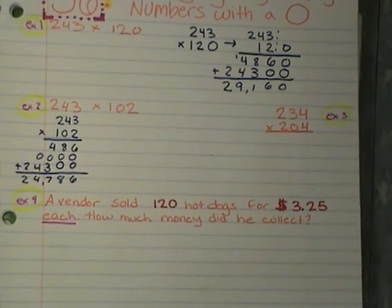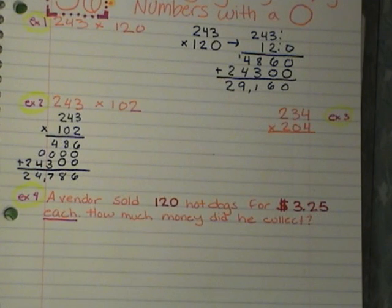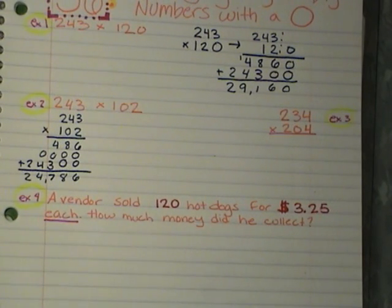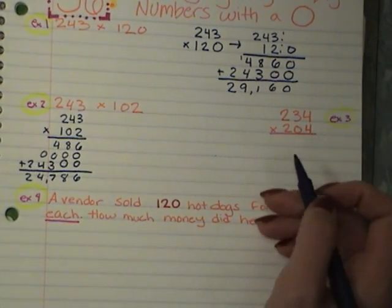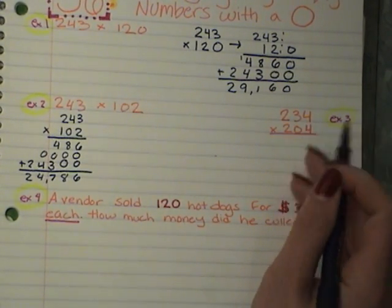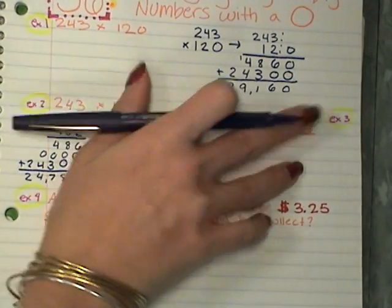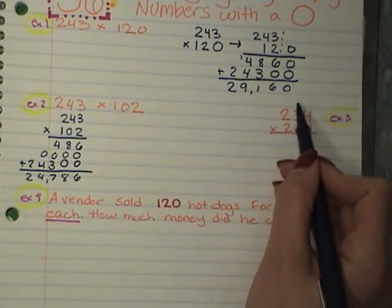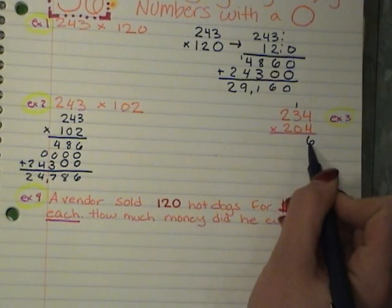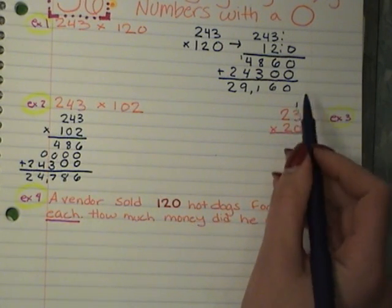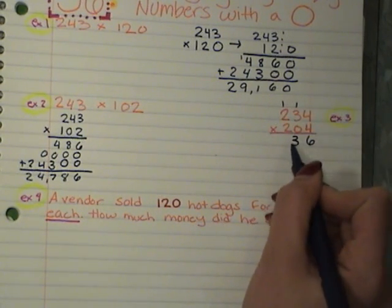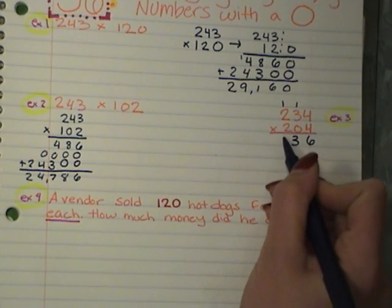Okay, try the next one by yourself. Go ahead, pause your video, see if you can do it, and then I'm going to do it with you. Okay, here we go. So, I'm going to start with my 4's. I can remember, I can put my finger over it if that helps. 4 times 4, 16. 4 times 3 is 12, plus 1 is 13. 4 times 2 is 8, plus 1 is 9.